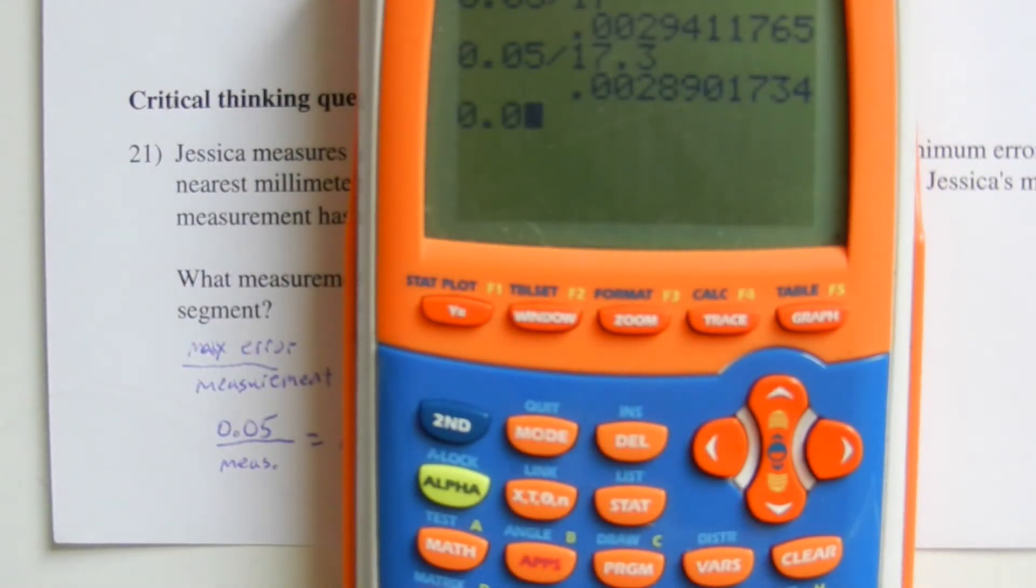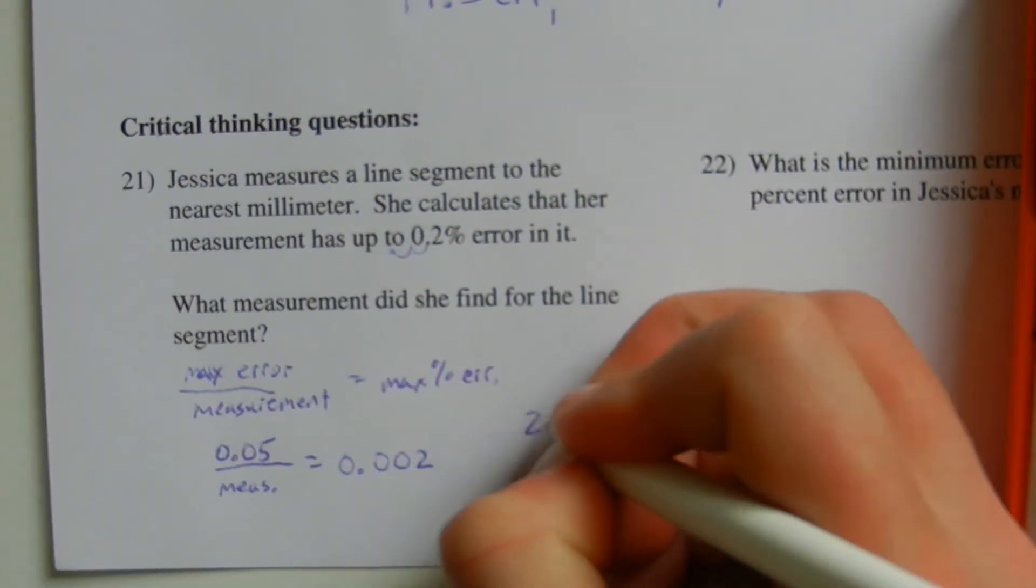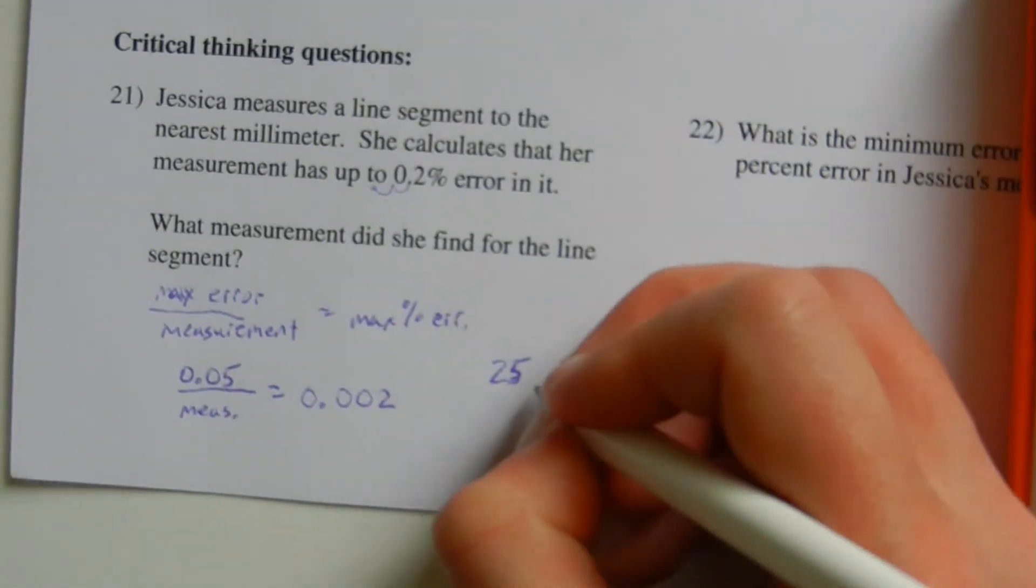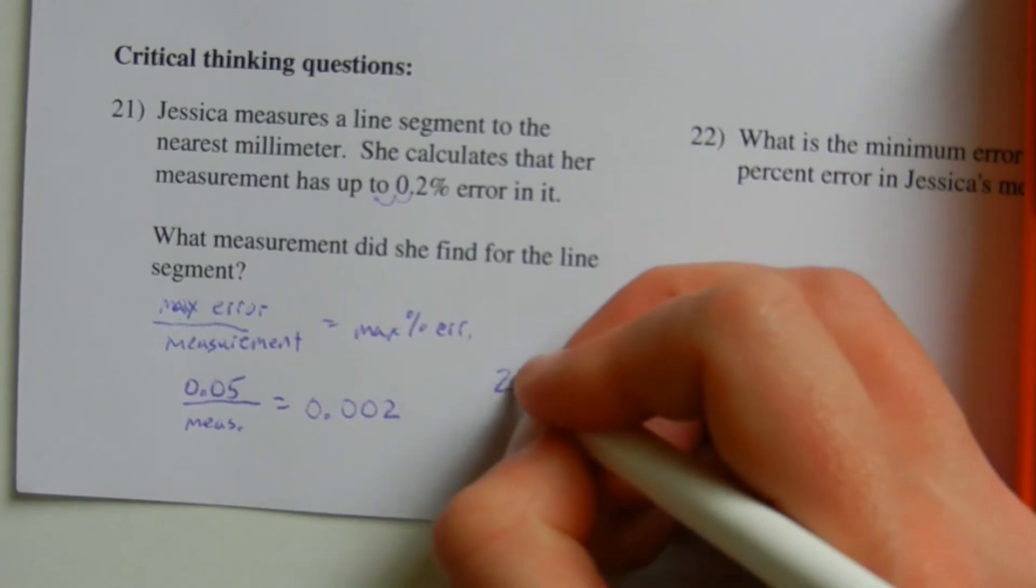So our final answer will be 0.05 divided by 0.002 to get 25 centimeters. So 25 centimeters is the measurement of Jessica's line segment.